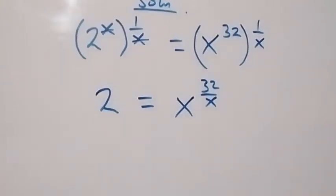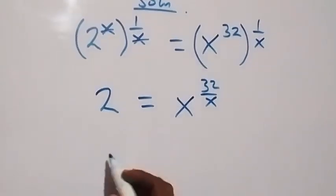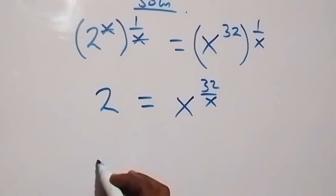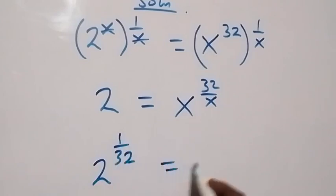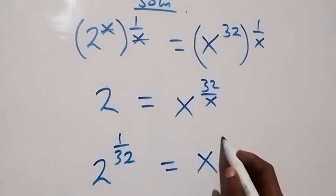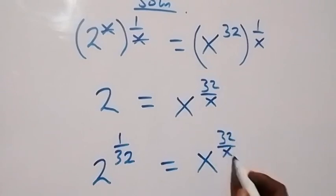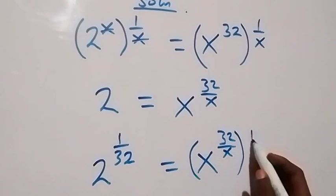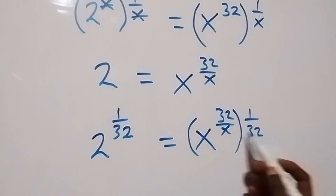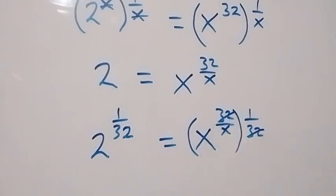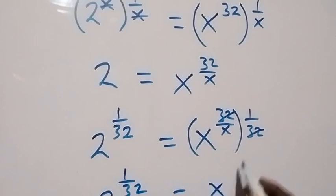In the next step, let's raise both sides to power 1 over 32. So here we have 2 raised to power 1 over 32, now equals to x raised to power 32 over x, then raised to power 1 over 32. Here, 32 cancels 32, then we have 2 raised to power 1 over 32 equals to x raised to power 1 over x.